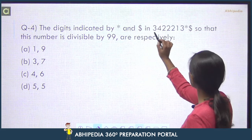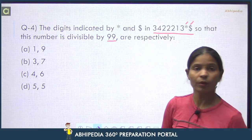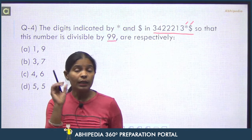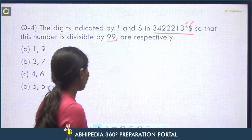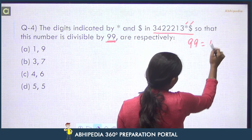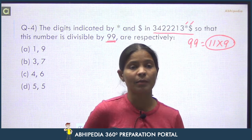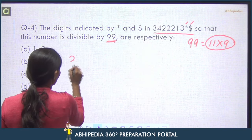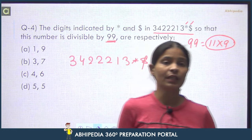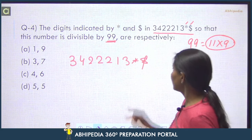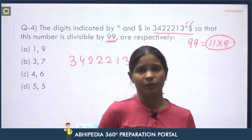Next question: The digits indicated by star and dollar in 342213*$ so that this number is divisible by 99. Check divisibility rule. To check if any number is divisible by 99, check the prime factors of 99, which is 11 into 9. If the number is divisible by 11 and divisible by 9, then that number will be divisible by 99. You will apply both rules.